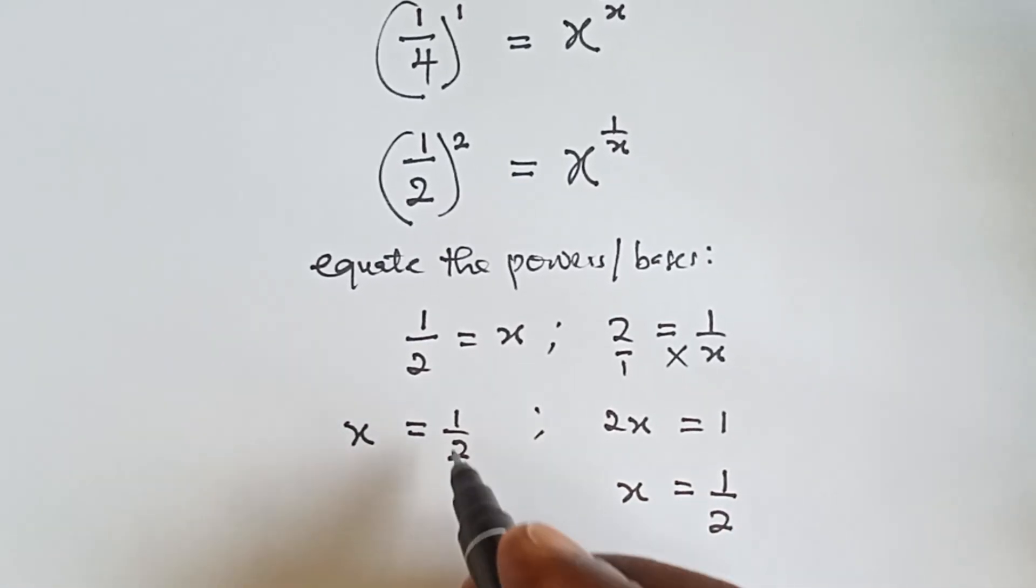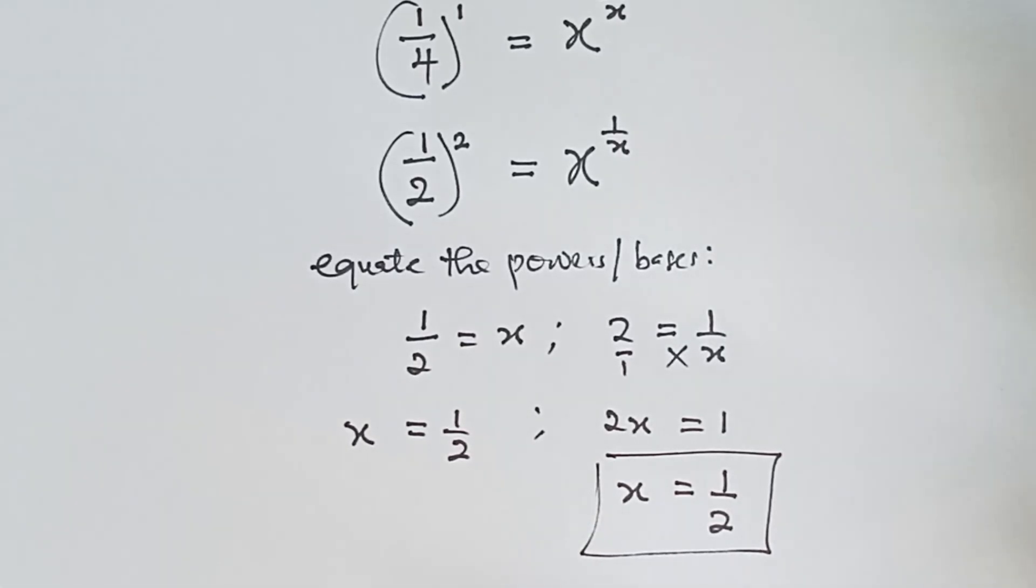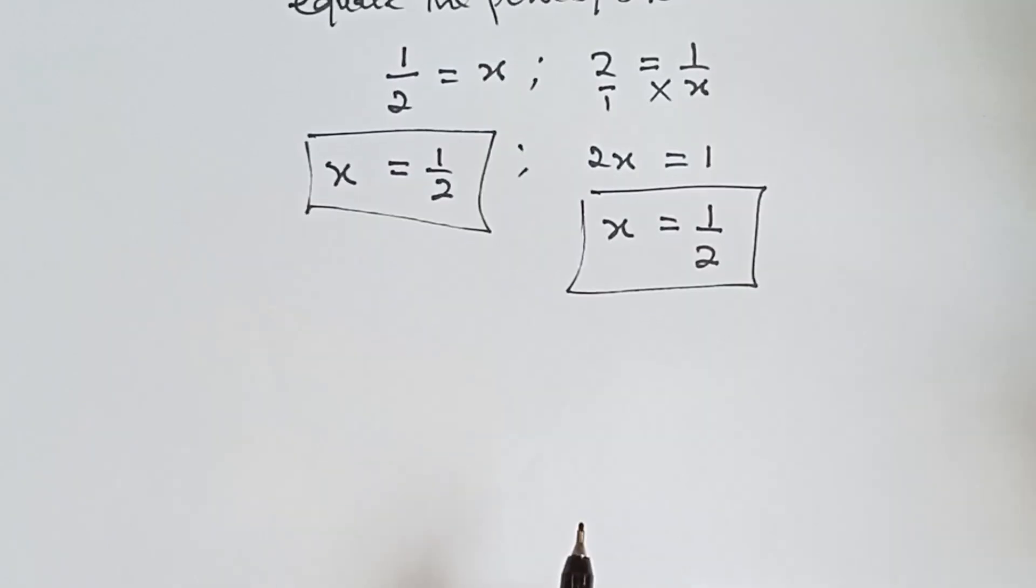Alright, so when we equate the powers we have x equals to 1 over 2, and also when we equate the bases we have x equals to 1 over 2. And that shows that x is actually equals to 1 over 2.